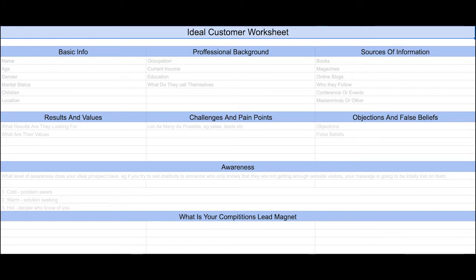This is going to be your ideal customer worksheet. When you're trying to think of your ideal customer, a lot of people only go through the basics. I'm going to say try and think of a name, age, gender, and marital status — if they've got children, where they're based. You're building up a person in your own mind's eye that is going to be the perfect customer for you. Remember, we're going to continue serving them via our emails. Then I want you to go a little bit further — I want the professional background.